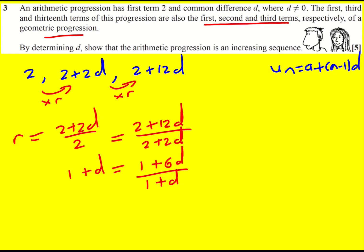Okay, if you don't do that and you cancel out later on, that's absolutely fine. So then 1 plus d squared is going to equal 1 plus 6d. Expand this, d squared plus 2d plus 1 is going to be 1 plus 6d.